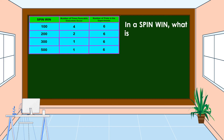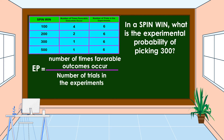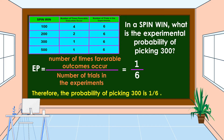In a Spin-Win, what is the experimental probability of picking 300? As we can see in the table, the number of times favorable outcomes occur for 300 is 1, and the number of trials in the experiment is 6. Therefore, the experimental probability of picking 300 is 1/6, which is 17 percent. 17 percent is closer to zero percent, which means the probability of picking 300 is unlikely to happen.